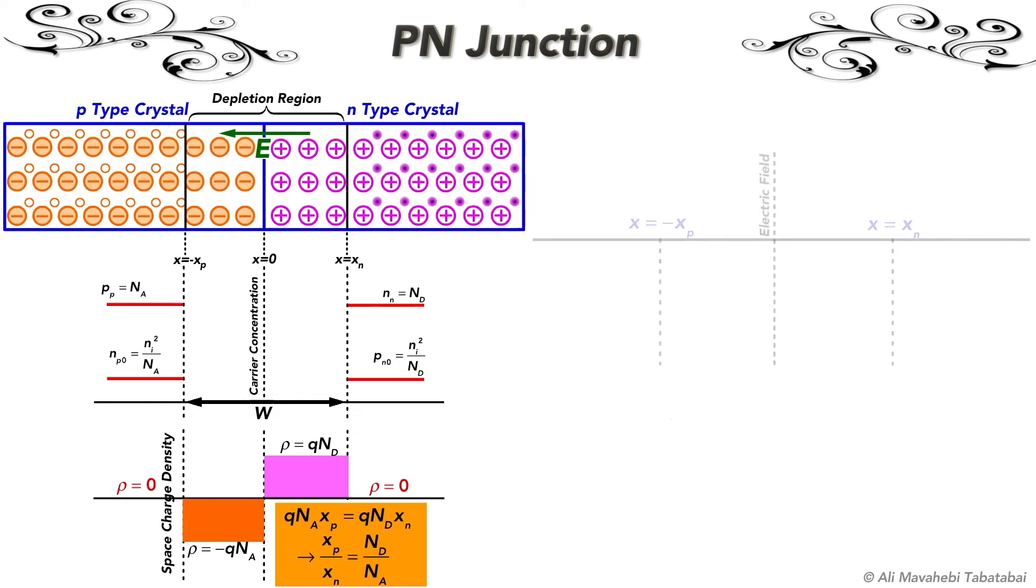To calculate internal electric field in the depletion region, we can use Poisson's equation, which is derived from Gauss's law. So dE over dx is approximately equal to rho, which is the space charge density divided by epsilon.